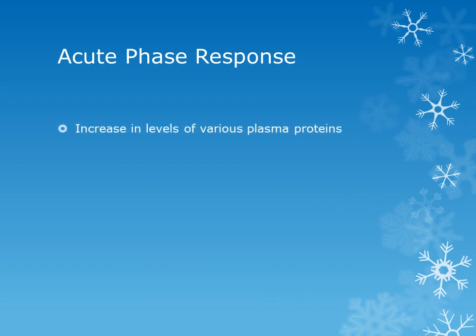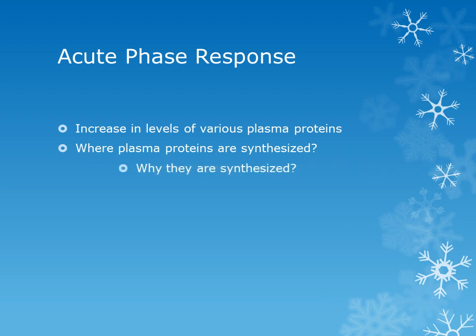The next important point that needs discussion is the acute phase response. What is acute phase response? It consists of an increased level of various plasma proteins. These plasma proteins are synthesized in the liver. They are synthesized in response to certain cytokines, especially pro-inflammatory cytokines that include interleukin-1, interleukin-6, and tumor necrosis factor.